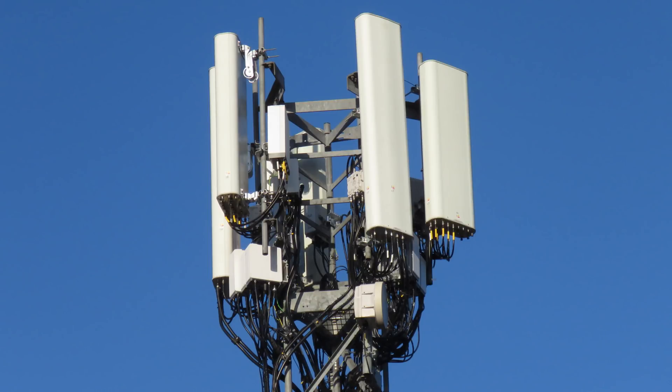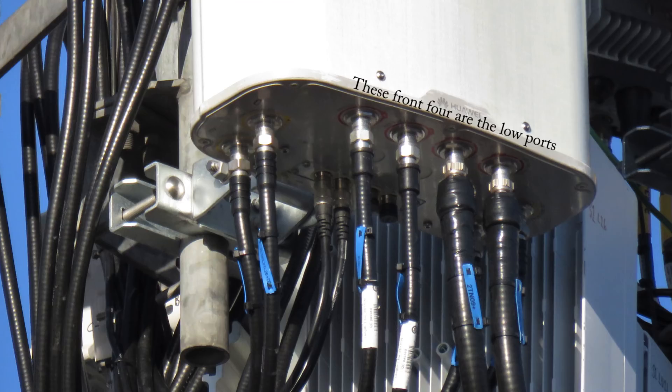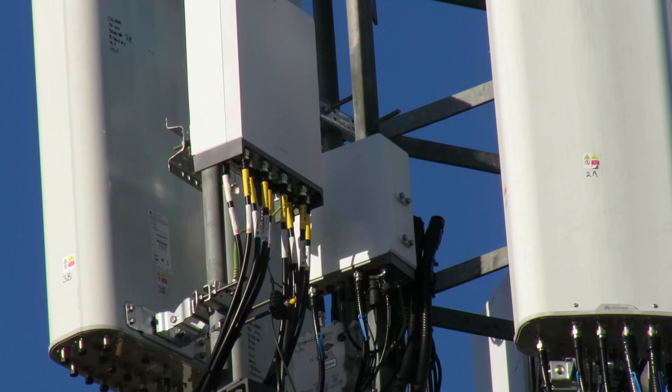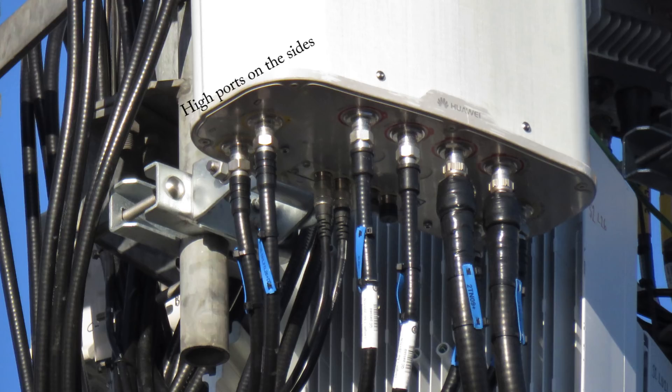The Huawei 8 port antennas for FDD have four low ports so two get UG09 from the ground and two get L08 from the remote radio at the back there with the blue tags.